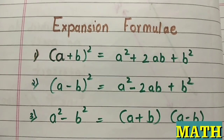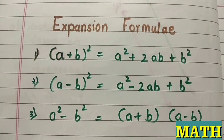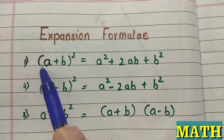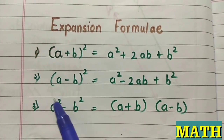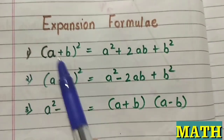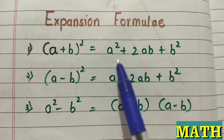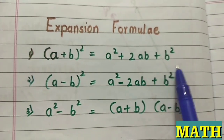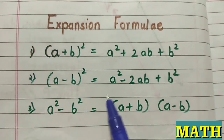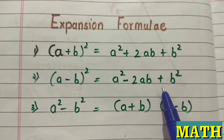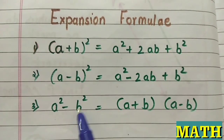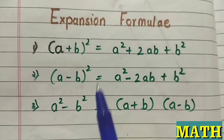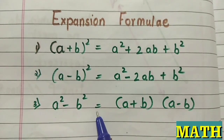In this video we will learn how to expand using expansion formulas. We all know these three basic formulas which you need to keep in mind. The first is (a+b)² = a² + 2ab + b². The second is (a-b)² = a² - 2ab + b². The third is a² - b² = (a+b)(a-b). These three formulas are important before we start with the sums.